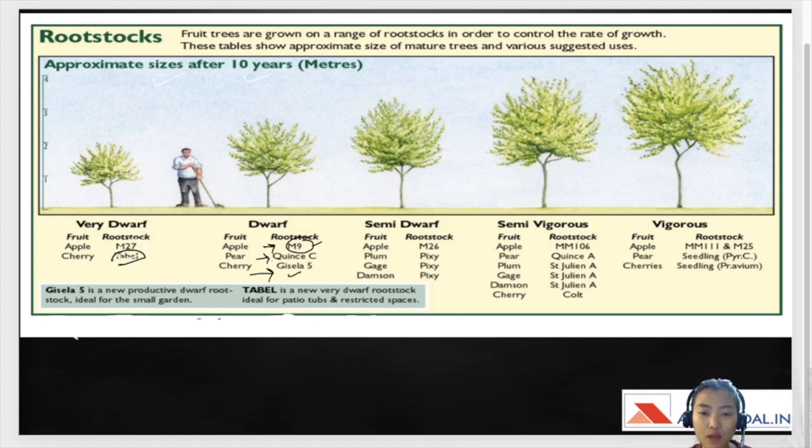Moving on we have semi-dwarf apple. We have M26 which is larger of course and it's also early bearing. For plum we have Pixie. Gage and Damson are just European cultivars of plum so they follow the same rootstock. For semi-vigorous fruits, in apple we have MM 106, Malling Merton 106. For pear we have Quince A. Plum we have St. Julian A and these are the same cultivars of plum. For cherry we have Colt.